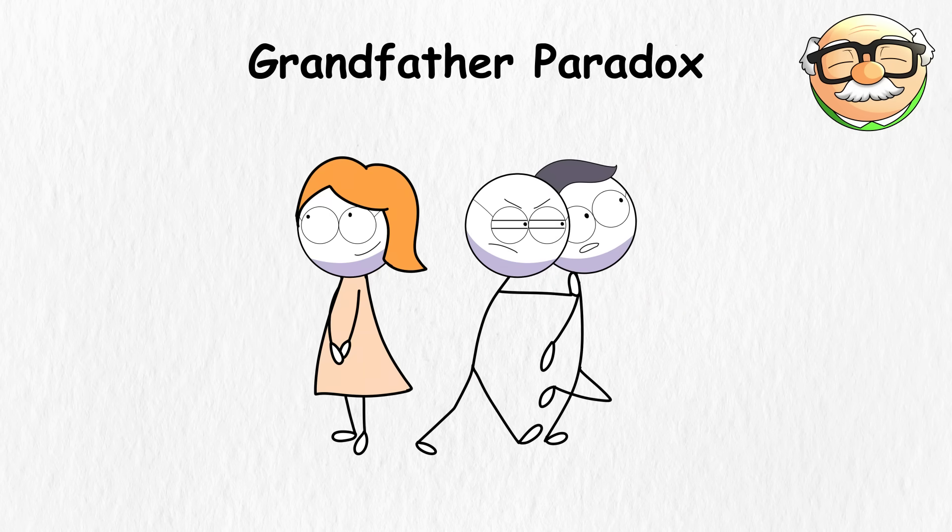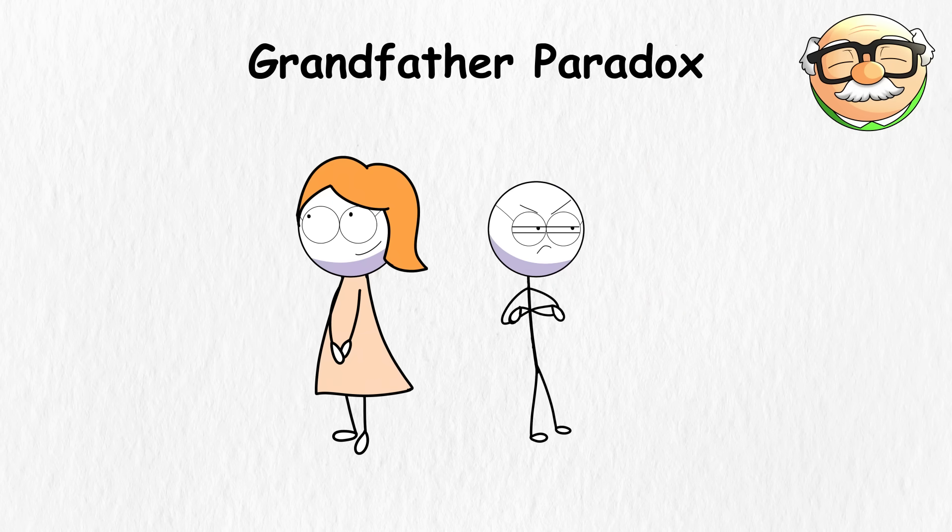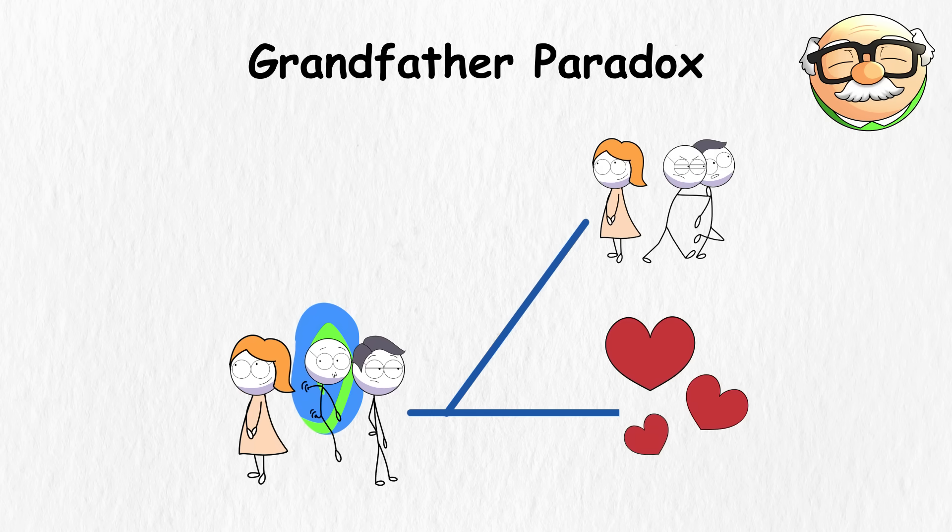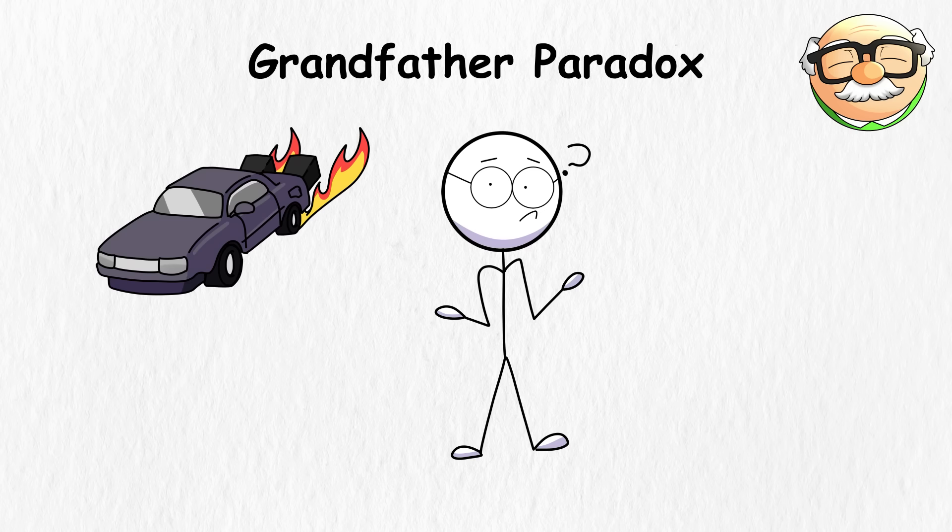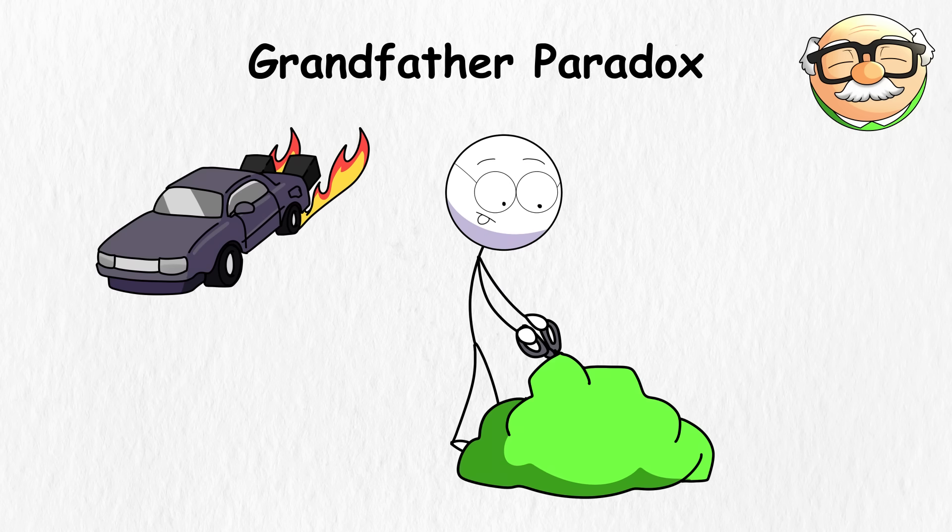So if you prevented your grandparents from meeting, that doesn't change the future events of your timeline, but only creates another timeline. But unless you find a way to invent a time traveling car, there's no way for you to tell if you can trim your family tree back into a shrub.